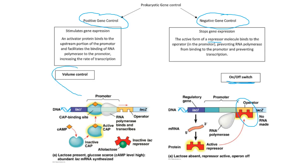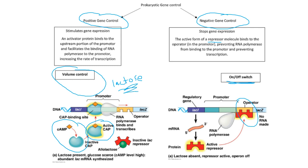Positive gene regulation is more of a volume control. Let's say the repressor has come off and transcription can happen — what you'd typically see is a very low level of transcription. But if you need to have more lactose broken down, for example more lactase, you might want to turn the volume up. If lactose is present but there's no glucose around, then cyclic AMP is going to bind to CAP, making CAP active. When CAP is active, it bonds to the promoter, helps RNA polymerase to bind, and then you have transcription at a very high rate, making a whole lot of lactase, which will break down a whole lot of lactose.